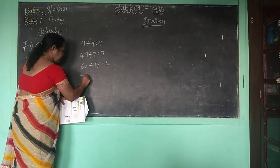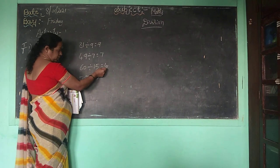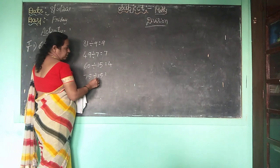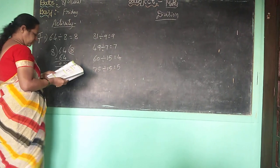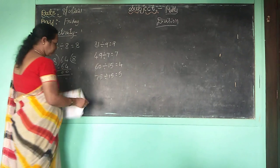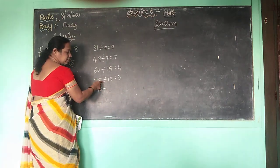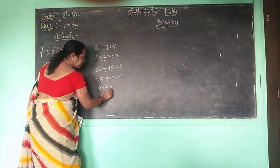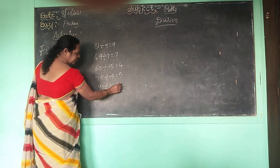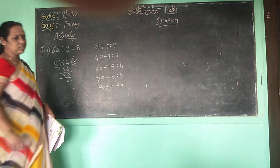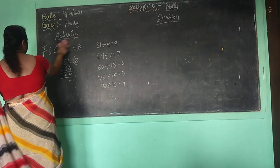75 divided by 15. 15 fours are 60, 15 fives are 75. You have to know the tables to do these. 190 divided by 10: 10 ones are 10, 10 eights are 80, 10 nines are 90. This is the division method using the multiplication table.